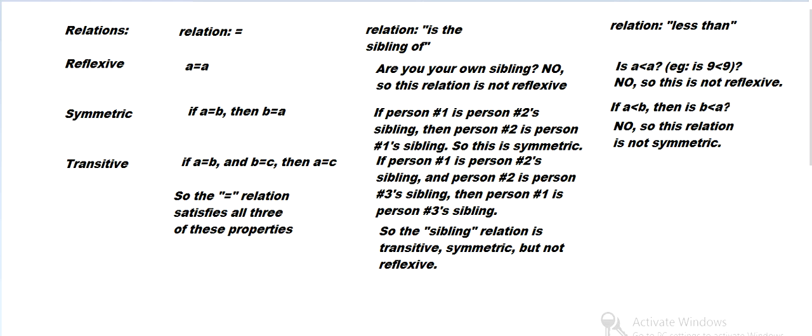And is it transitive? So if one number is less than the second, and the second is less than a third, then the first would be less than a third? So if A is less than B and B is less than C, then A is less than C. Those represent actual numbers. That's true, so this is transitive. So less than is transitive, but not symmetric and not reflexive. So that's three basic examples of relations.